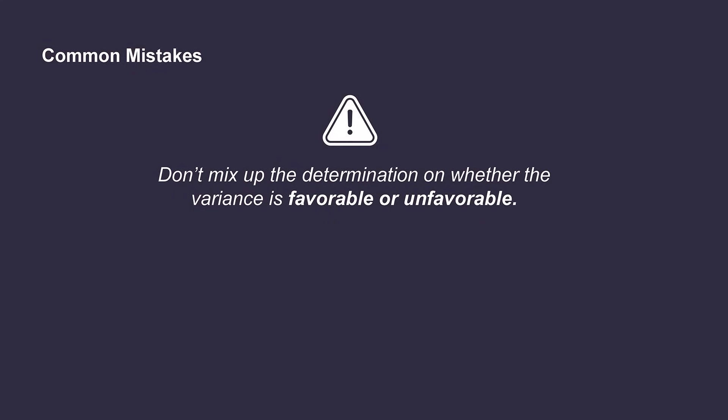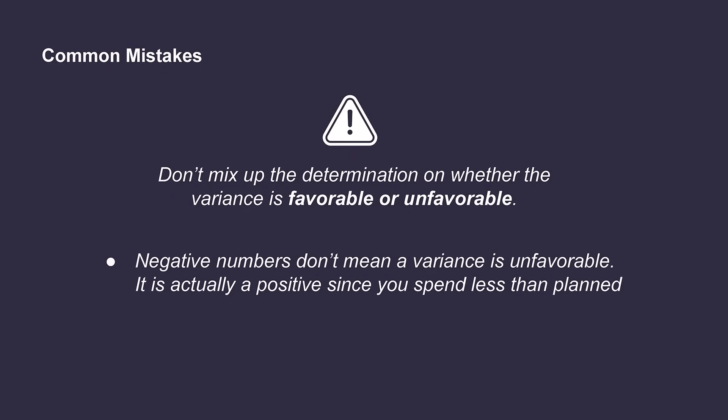Anytime a variance is identified, it's important that the company determine whether it is favorable or unfavorable so they can make a decision on how to proceed. When calculating overhead variances, it's a common mistake to mix up this determination. In the example we just looked at, when we took the actual variable overhead of $1,200 and subtracted the applied variable overhead of $1,500, this results in a negative $300 amount. While it may be tempting to think this is an unfavorable variance since it's a negative number, in the case of overhead variances, since they spent less than they planned, this is actually a positive result and they would therefore have a favorable variance.